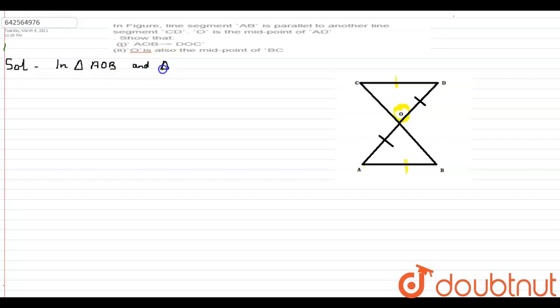In triangle DOC, first we can say that AO is equal to DO. This is given to us, the reason being that O is the midpoint of